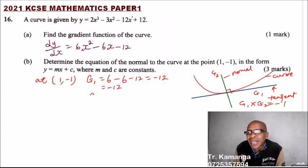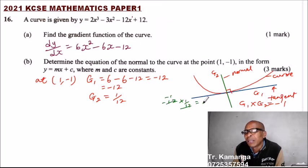So what is the gradient 2? Gradient 2, gradient 1 times gradient 2 should be 1 over 12. So because when you multiply minus 12 multiplied by 1 over 12, you cancel there, you get minus 1 times 1, you get minus 1.